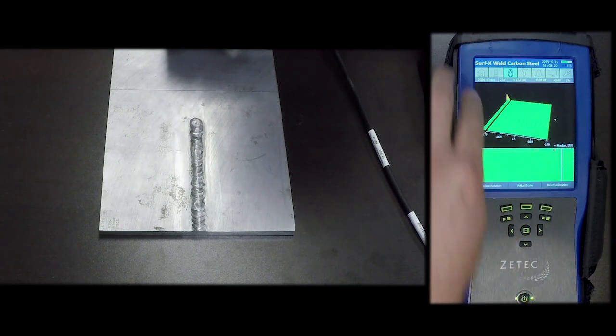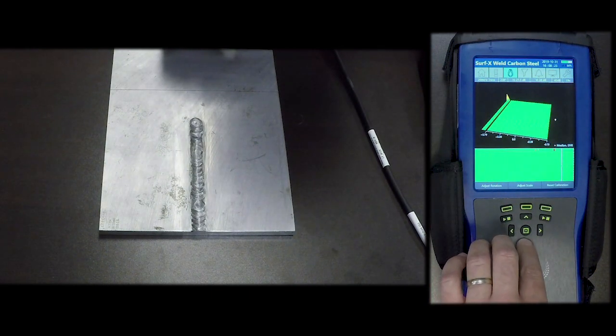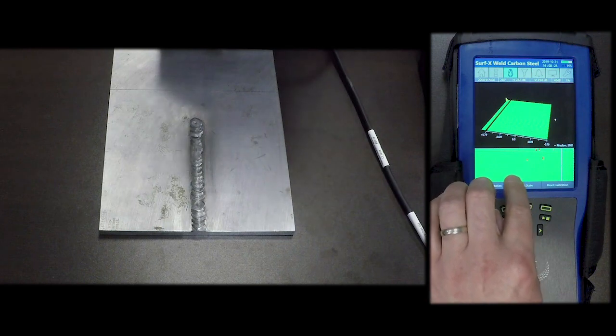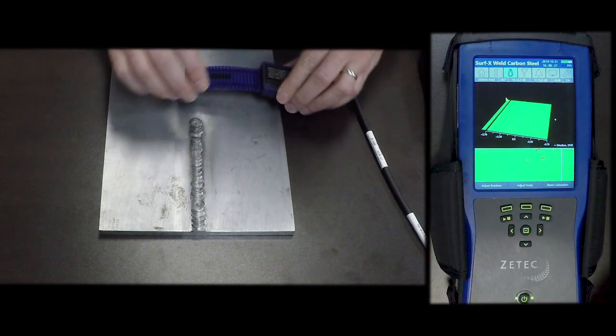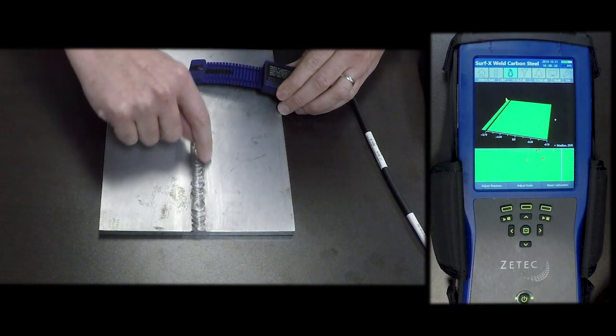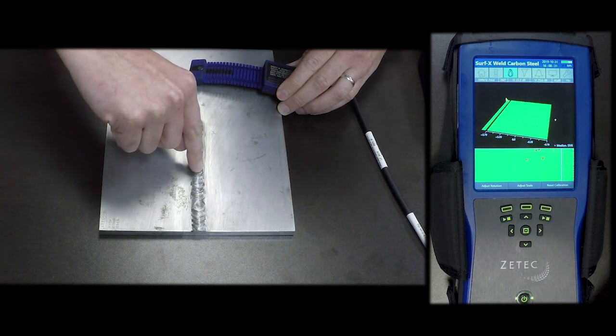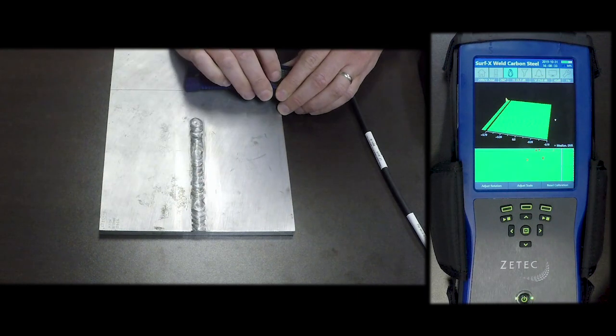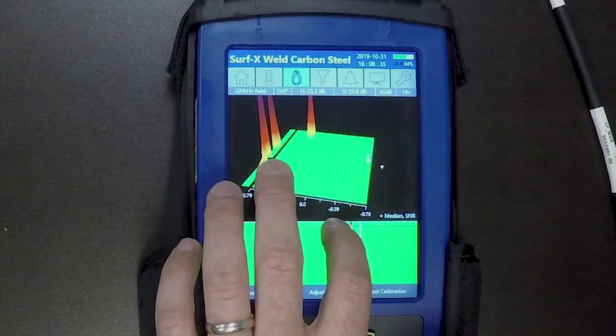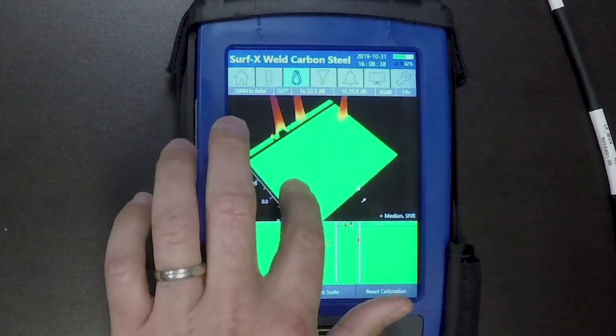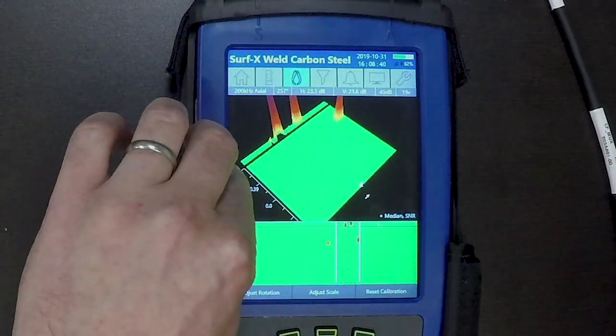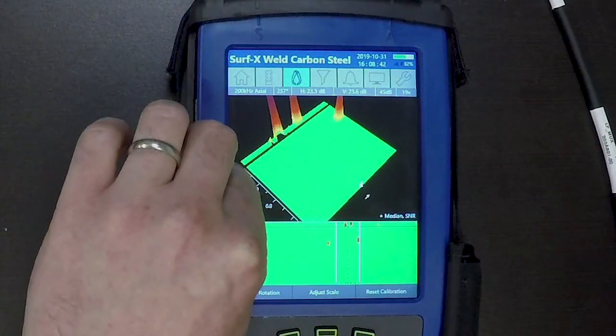I'm currently on the transverse, so I'm going to switch to the axial channel. You can see in the axial channel the flaws here are oriented in the axial direction and also the one that's in the toe of the weld.